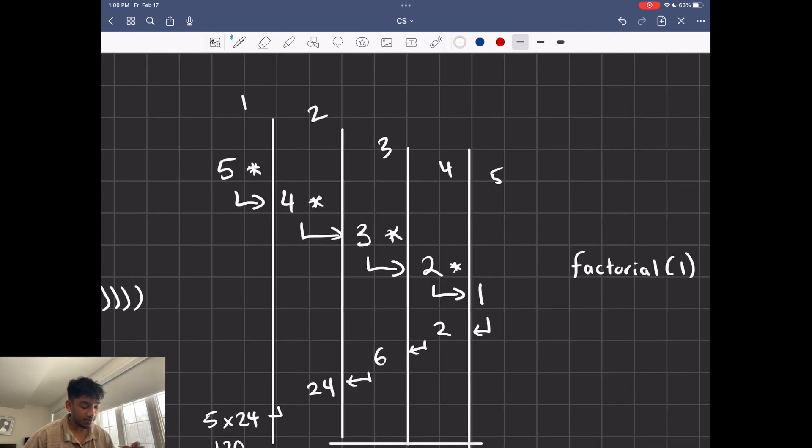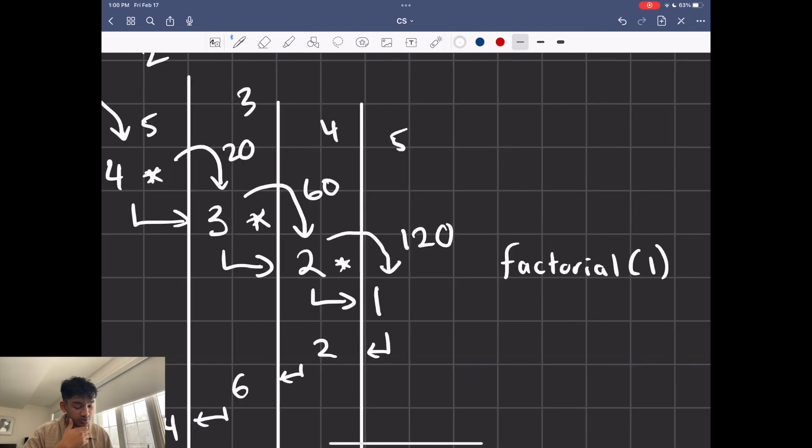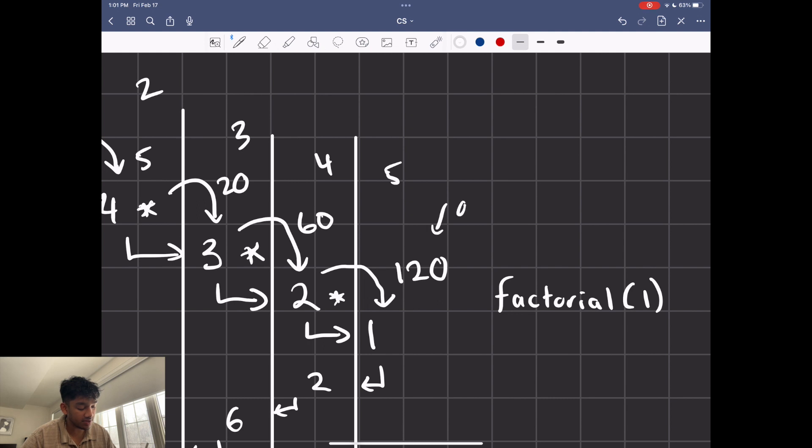We got to come up with a way where 5 can be carried with us to this new stack, and then multiply those two to get 20, and then 20 gets carried here, and then those get multiplied. 60 gets carried here, and then those two get multiplied, and then we can just do 1 times 120 and return that just by itself.